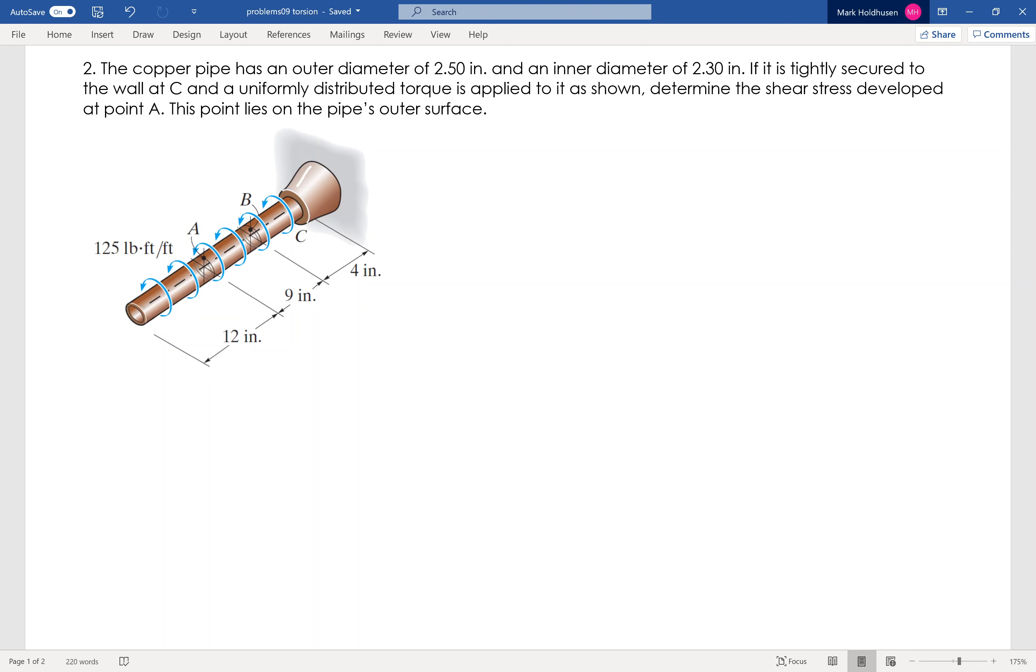And I want to find the stress at point A. So to find the stress, it's going to be tau equals Tc over J. And that's what's going on at A. So I have to cut it at A to figure out what the torque is at A.